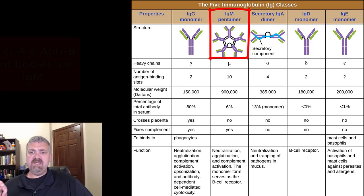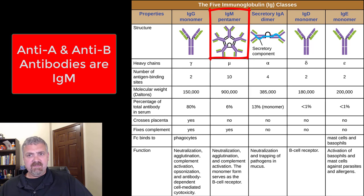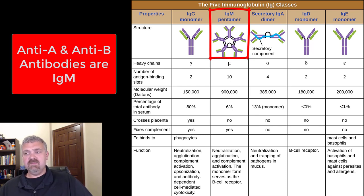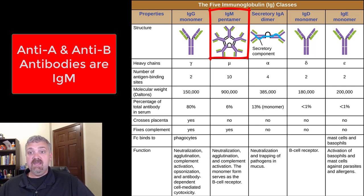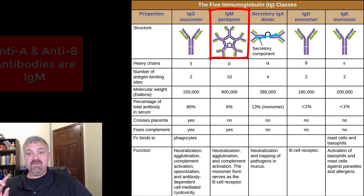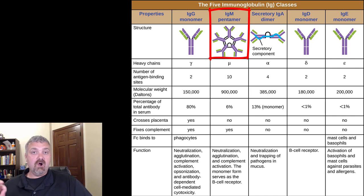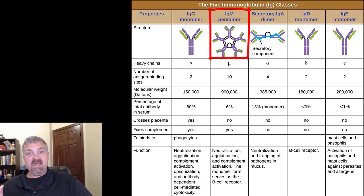The key example for IgM would be your anti-A and anti-B antibodies. These can't cross the placenta, but these are the ones that lead to your actual blood types. Your blood type — A, B, AB, or O — depends on which antigens are on your blood cells, and the IgM antibodies would be the antibodies in your plasma. So when you think RH antibodies, think IgG. When you think anti-A and anti-B, think IgM.